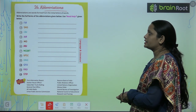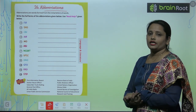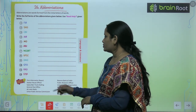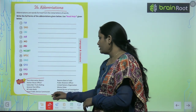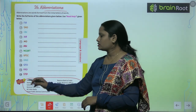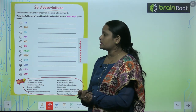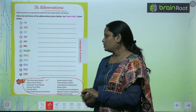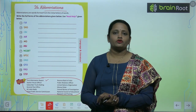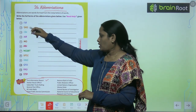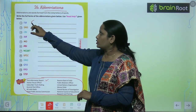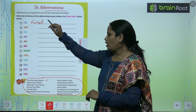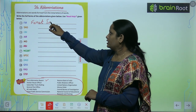We can use this Need Help box. So here the first one is FIR, and FIR is First Information Report. So when someone is robbed or something is stolen, we go to the police station and we can file an FIR — First Information Report.